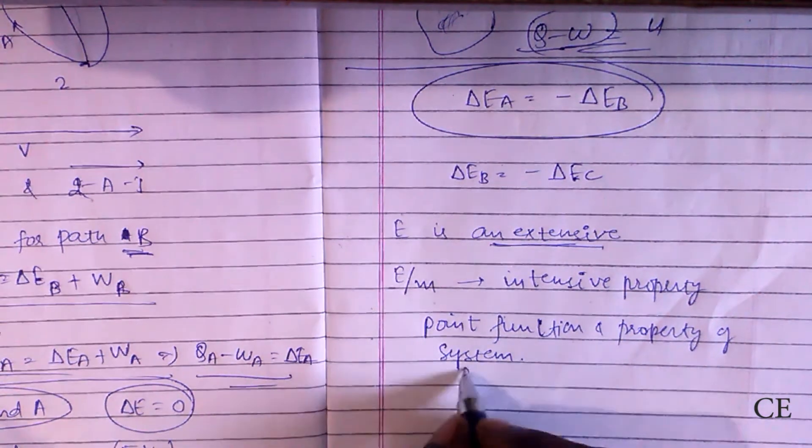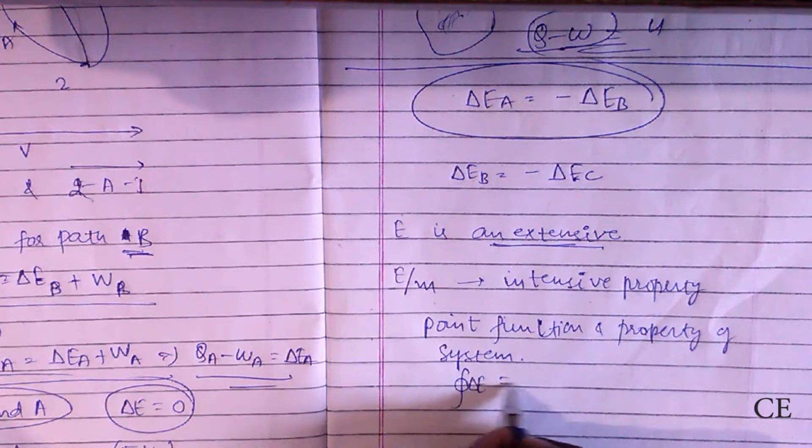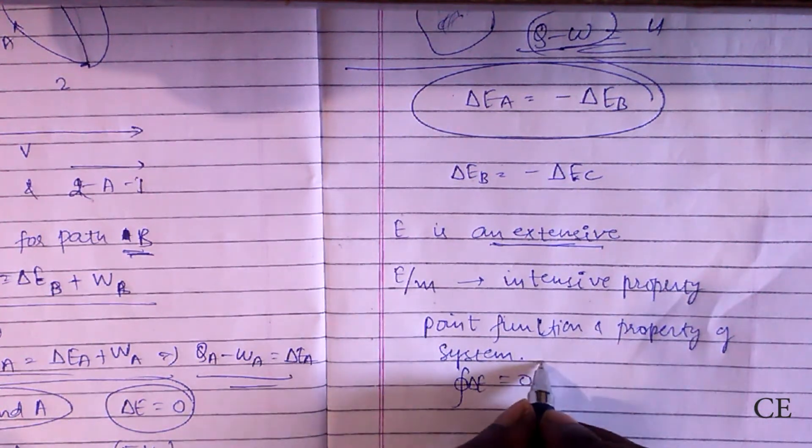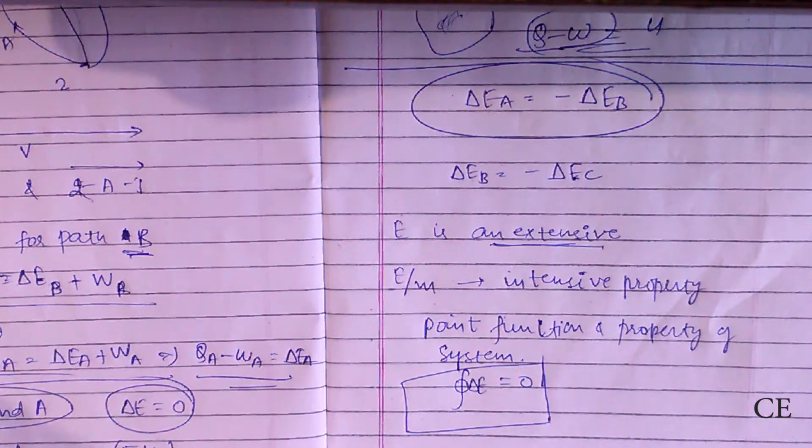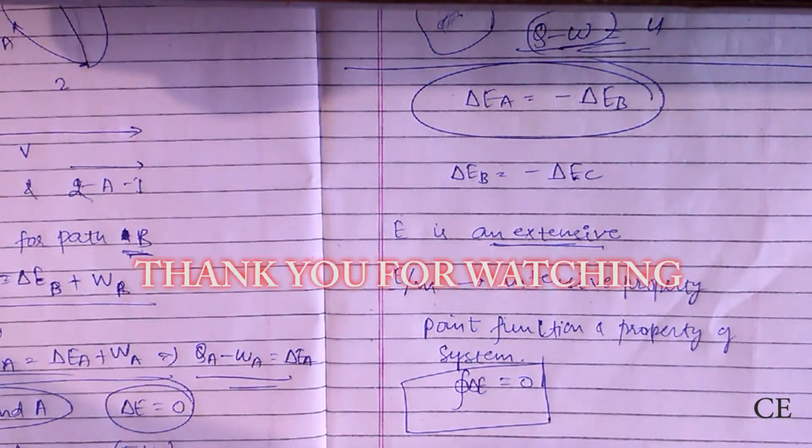So if we talk about a cyclic integral of delta E, then it would be equal to zero. And this is it. Thank you for watching. If you found this video helpful, then give a thumbs up, like, share, and comment.